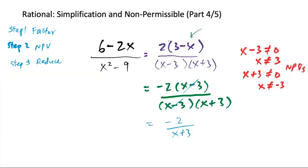One remark. If you don't factor out the negative 1 in here, you will not end up with a negative as your answer. You'll just have 2 over x plus 3, which would be incorrect.